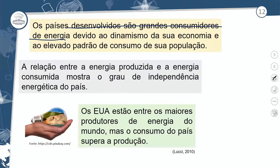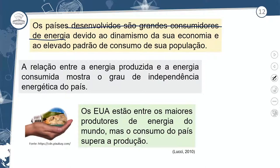A relação entre a energia produzida e a energia consumida mostra o grau de independência energética do país. Os Estados Unidos estão entre os maiores produtores de energia do mundo, mas o consumo do país supera o da produção — pois tem polo industrial e cinturões da agricultura, o que demanda um grande volume energético para atender suas necessidades em todos os setores econômicos: primário, secundário e terciário. Os Estados Unidos, juntamente com o Japão, são os maiores importadores de energia do planeta, dois países desenvolvidos que buscam energia em diversas partes do mundo.